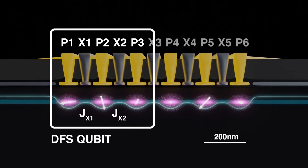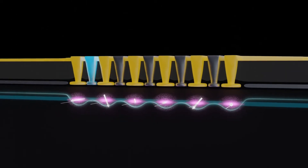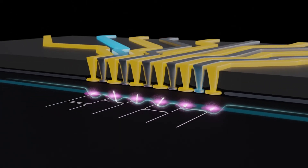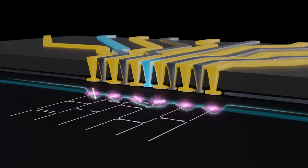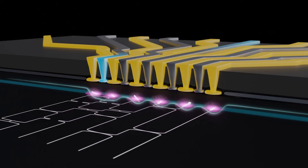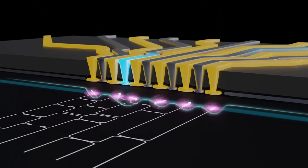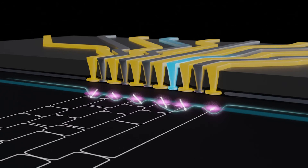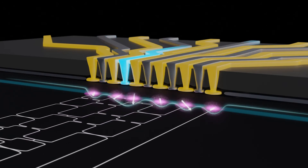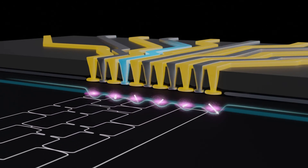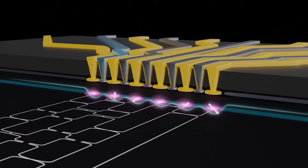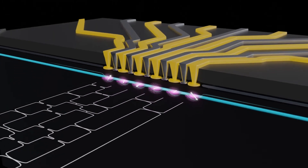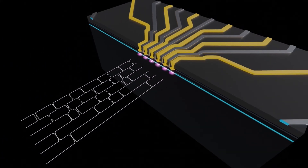There are six dots because three of them make a single qubit. What the voltages on those gates do is push the electrons closer to one another, and the more you push them, the stronger the exchange interaction, which swaps or partially swaps spins. We then make sequences of calibrated exchange interactions, shown by braiding diagrams.